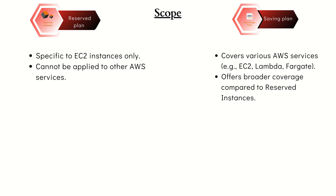The next point is application scope. Saving Plan applies across multiple AWS services including EC2 and Fargate, making them suitable for organizations using multiple AWS services. But Reserved Instance can apply to various services like EC2 and RDS; however, they are generally more limited in scope of AWS services when compared to Saving Plan.